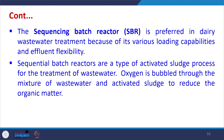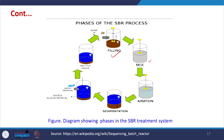Sequential batch reactors are a type of activated sludge process for wastewater treatment, where oxygen is bubbled through the mixture of wastewater and activated sludge to reduce organic matter. The SBR process includes a fill phase, a mixing phase where water enters, followed by aeration, then sedimentation where the sludge settles. After treatment the treated wastewater is removed and the excess sludge is also removed, followed by an idle phase depending on retention times.